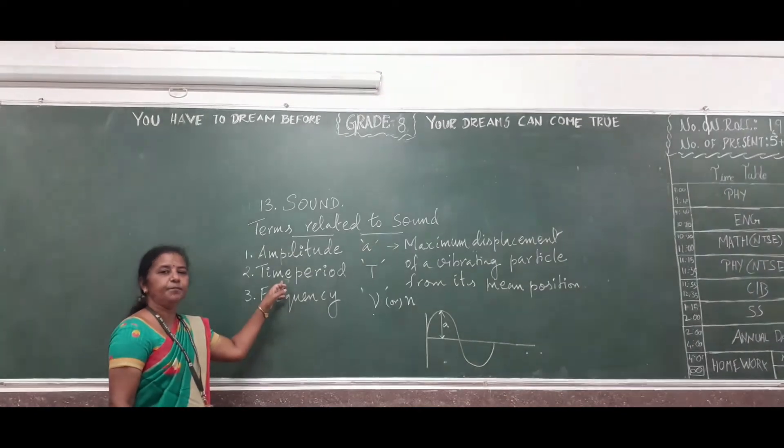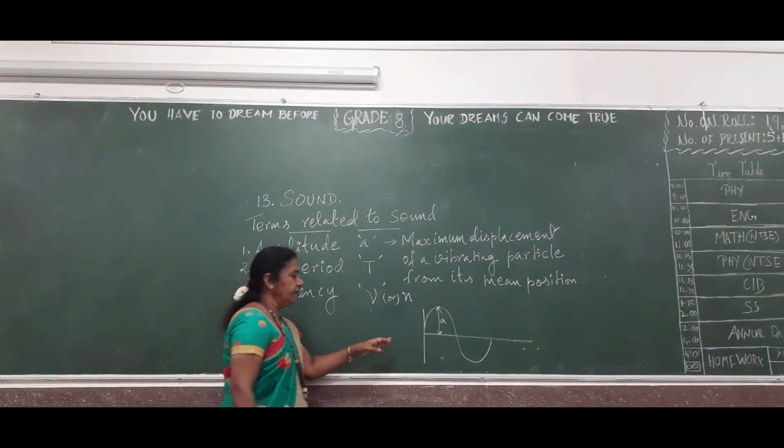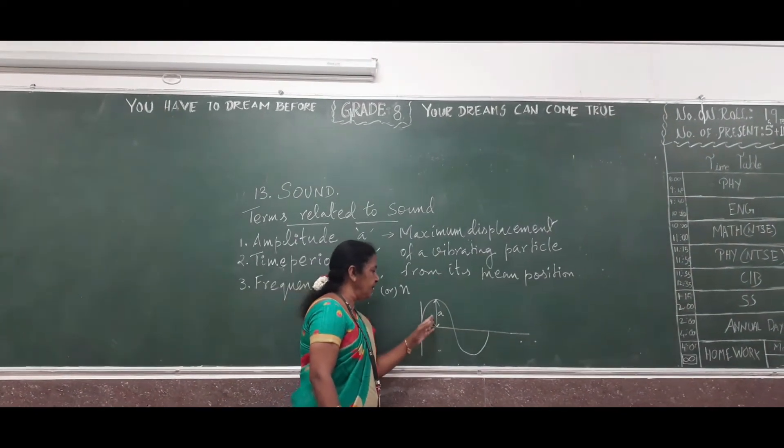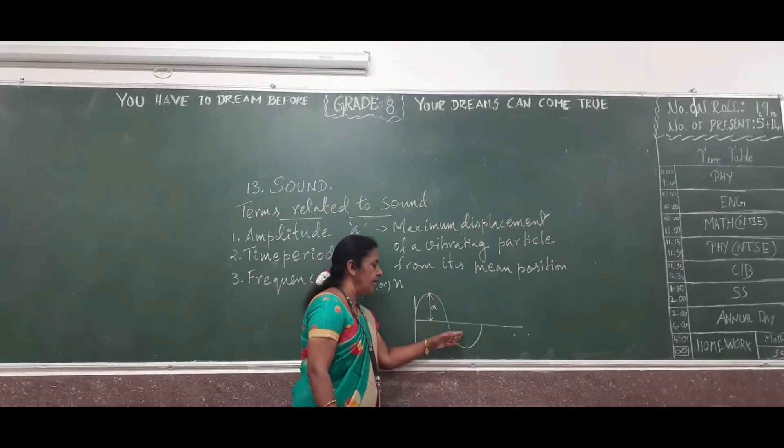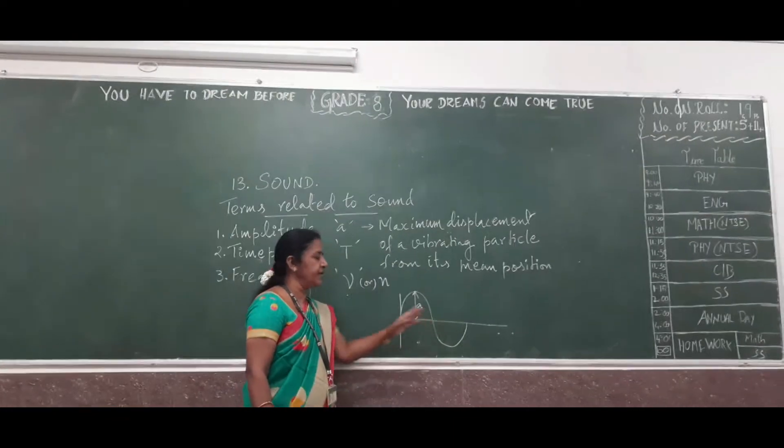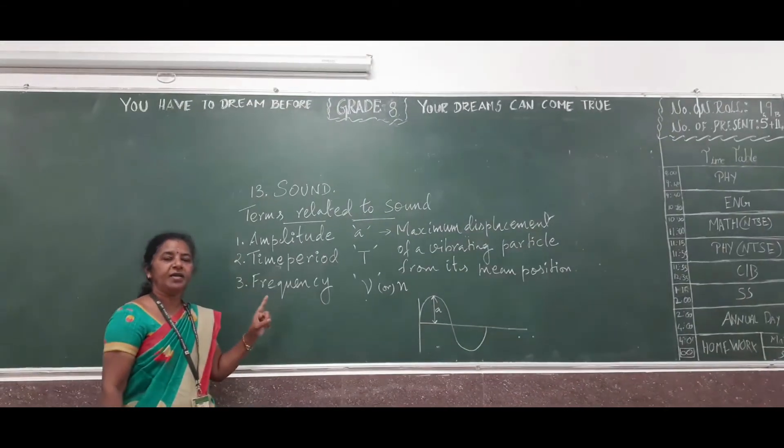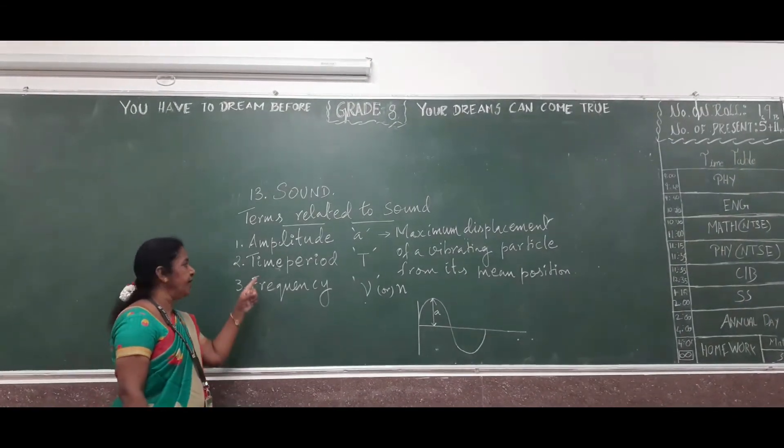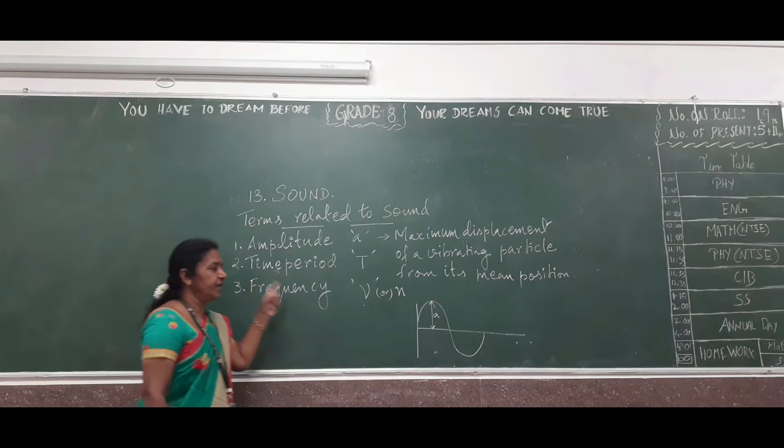And the second one - what is meant by time period? This is together - it is half positive and half negative. Together is called as one wave. To complete one full vibration is called as time period.